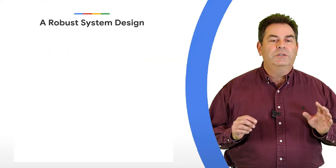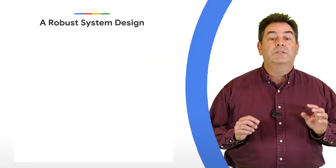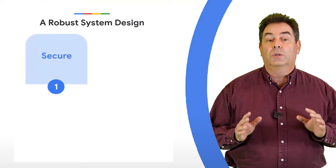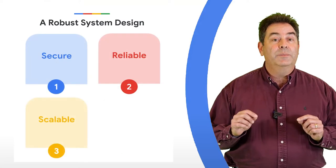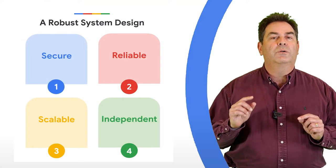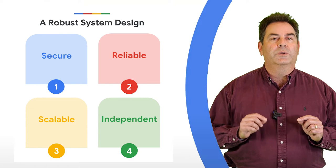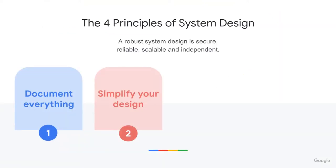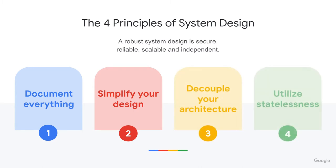In order to achieve a robust system design that is secure, reliable, scalable, and independent, we recommend you follow four key principles: document everything, simplify your design, decouple your architecture, and utilize statelessness.